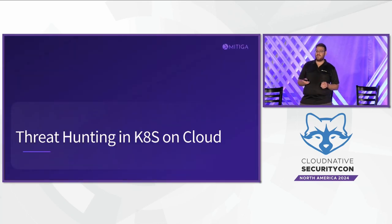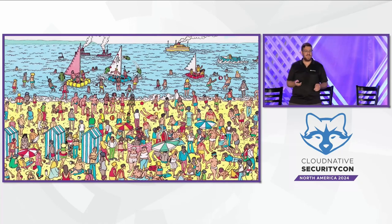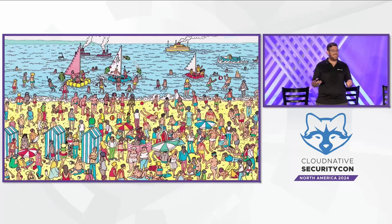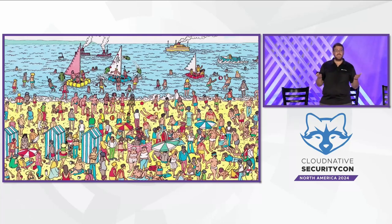Now we're going to talk about threat hunting in Kubernetes on the cloud. What is threat hunting? Why should we perform it? And how can we do it? Let's start with a simple analogy: think about a child playing Where's Waldo. When a child opens the book, they don't know where Waldo is hidden. However, they assume he's there and start scanning the page. Similarly, in our field, sometimes threat actors succeed in compromising an environment without triggering critical alerts in threat detection services. We believe you should assume there are threat actors in your Kubernetes environment and actively search for them. This proactive approach is called threat hunting.